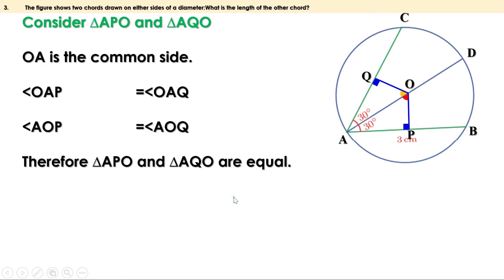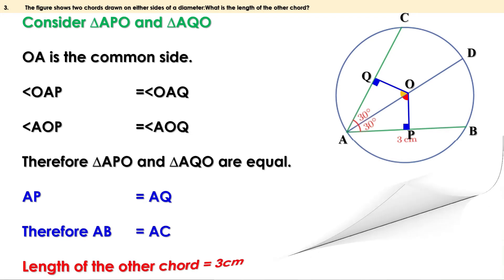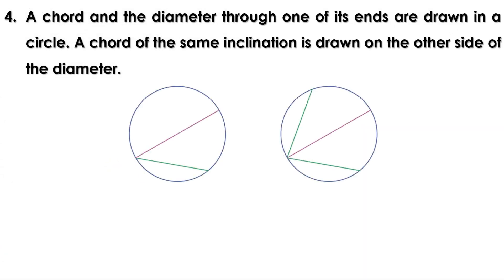That means one side and the two angles at the ends of triangle APO are equal to one side and two angles at the ends of triangle AQO, so the two triangles are equal. When two triangles are equal, the sides opposite to equal angles are equal. The sides opposite to the equal angles are AP and AQ, so AP equals AQ. We know the perpendicular drawn from the center to a chord bisects the chord, so AP is half AB and AQ is half AC. Therefore AB equals AC — the length of the other chord is also 3 centimeters.